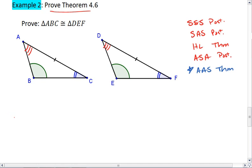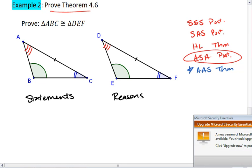This then sets me up to use the ASA postulate, because I'll have now two angles and the included side. So, that's how I'm going to go about proving theorem 4.6. Let's write this out formally.